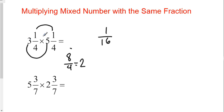3 times 5 is 15, plus the 2 is 17. So the answer to this problem is 17 and 1 sixteenth.